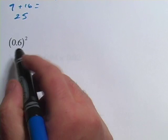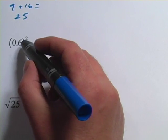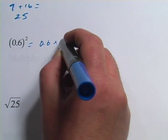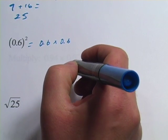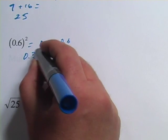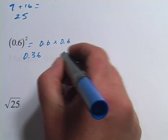Let's look at the next one. We have 0.6 squared. So this really is 0.6 times 0.6. And if you were to plug that into your calculator, you'd get 0.36. Let's just do the multiplication here.